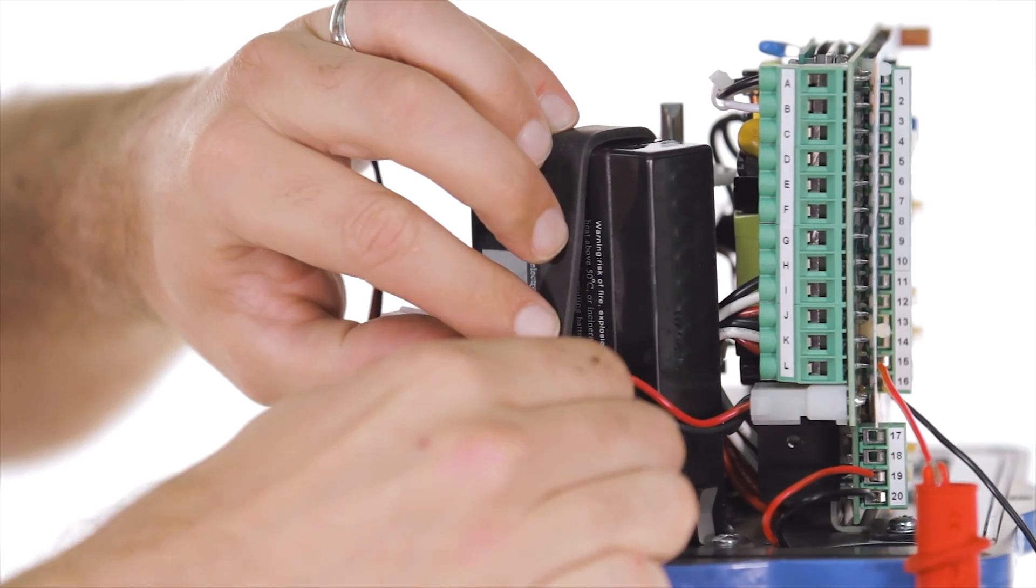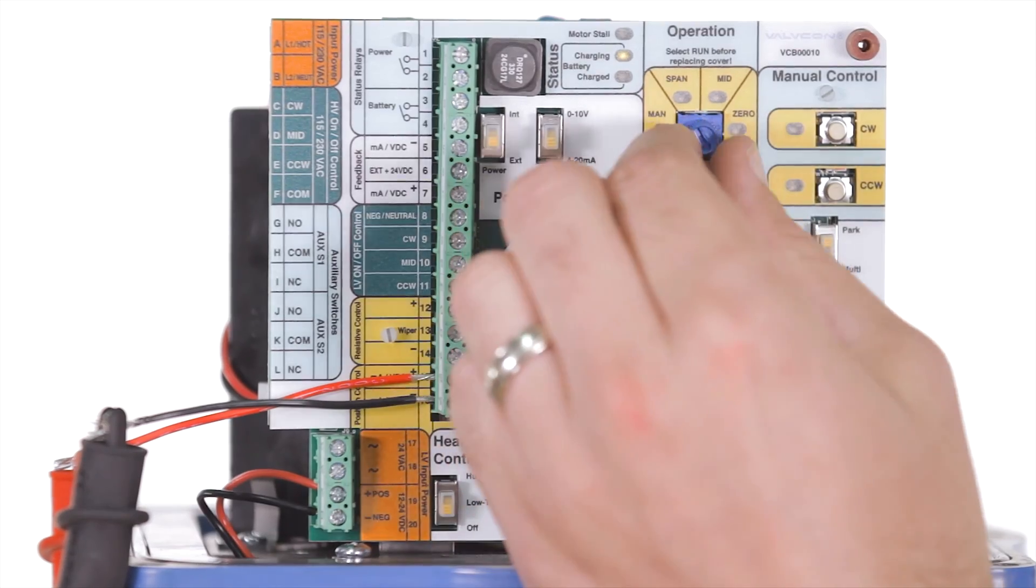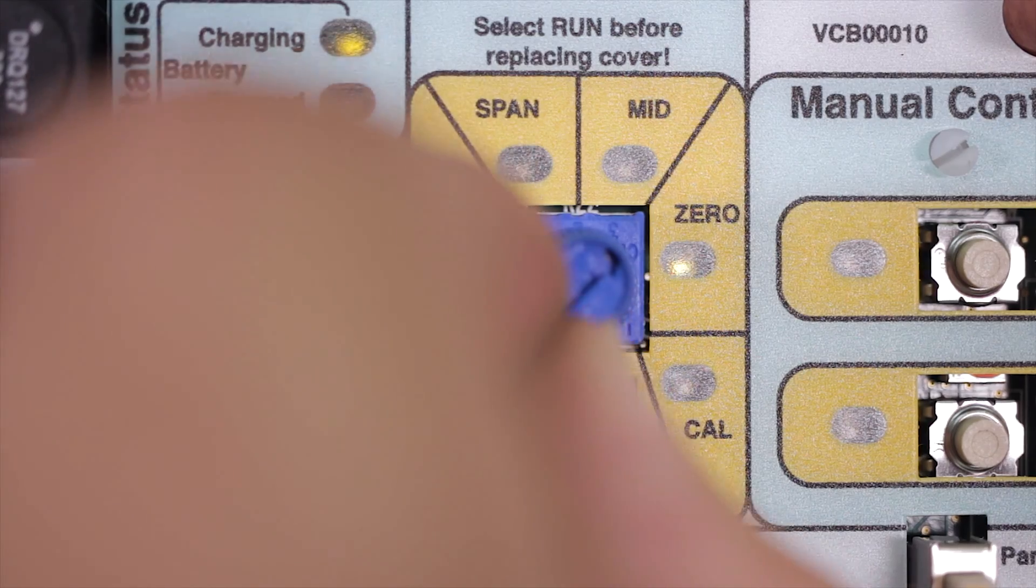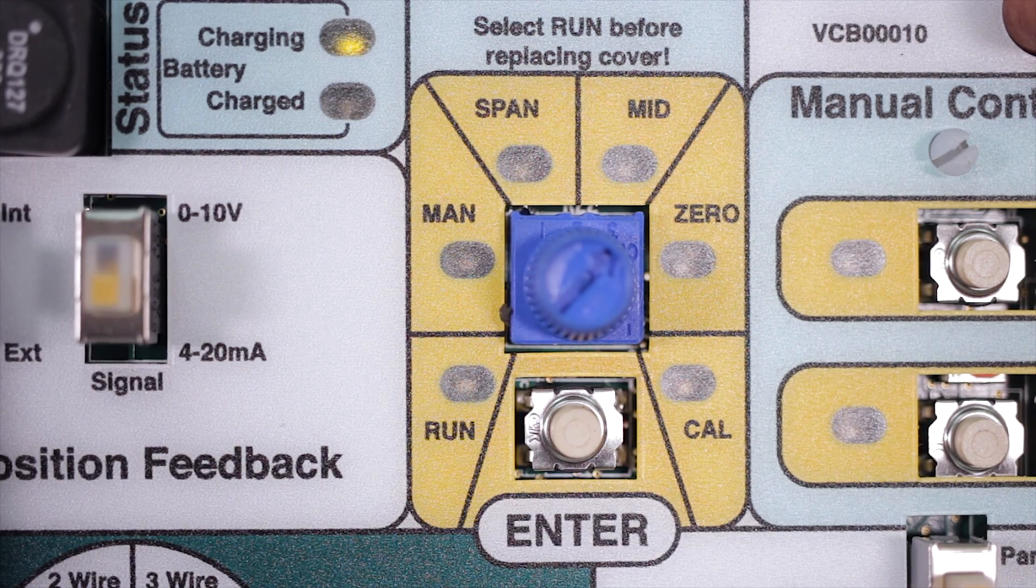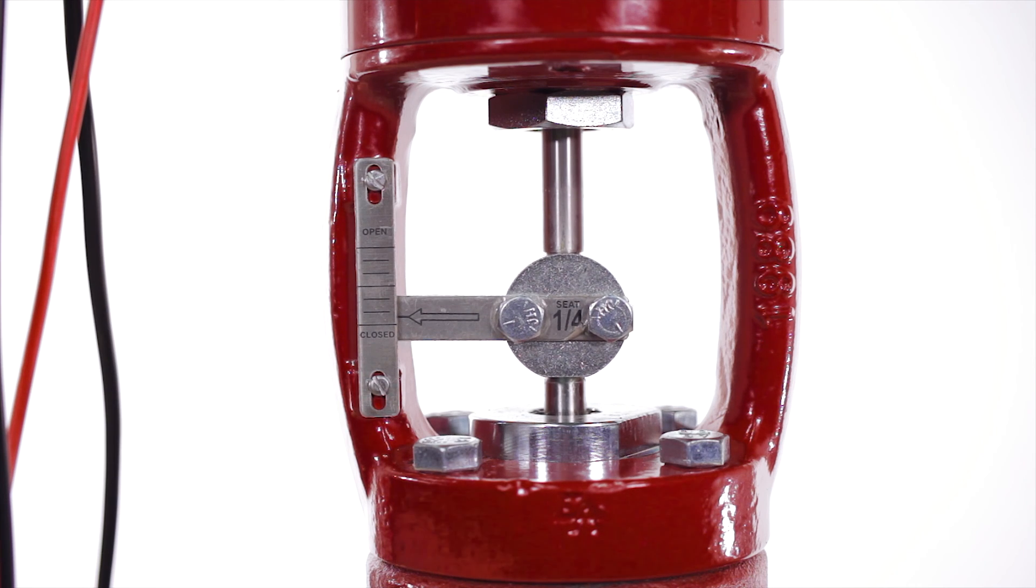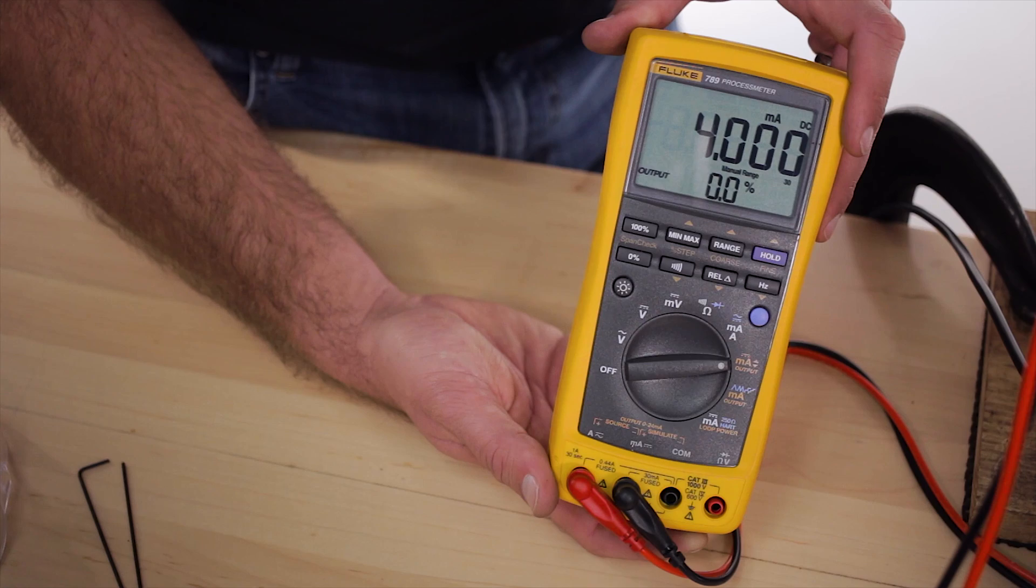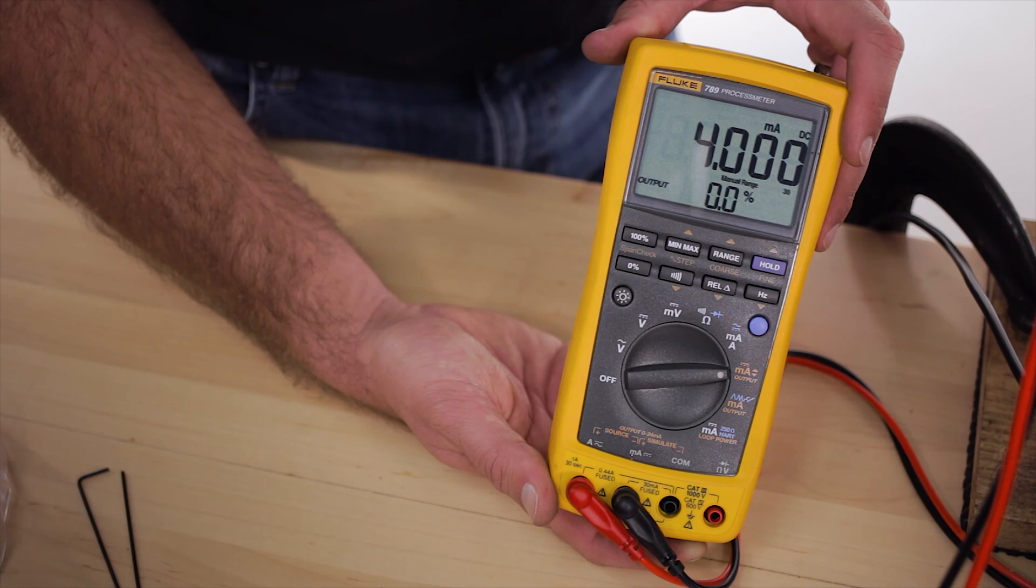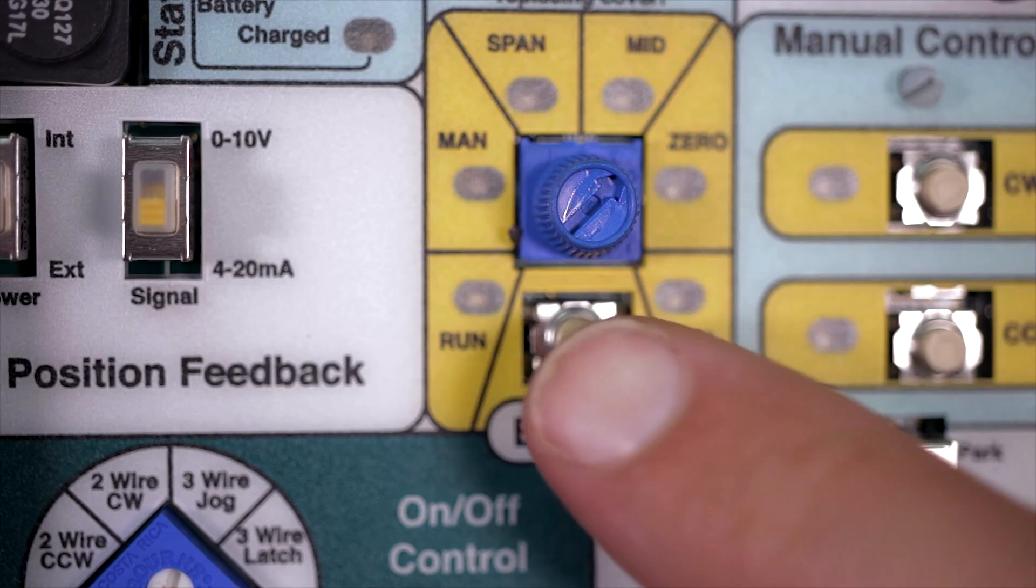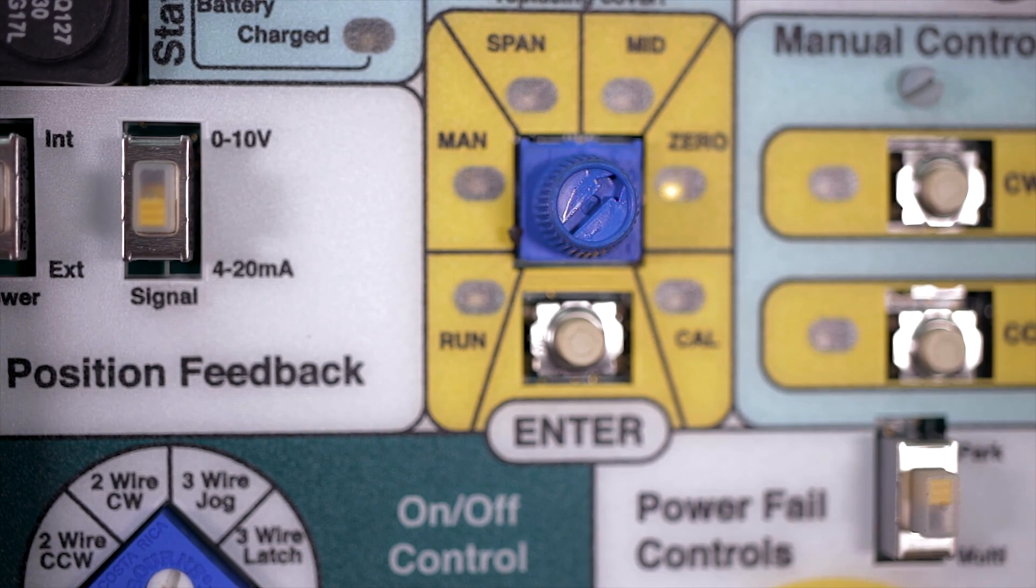Next we'll set your smart limits. Turn your operation mode selector switch to the zero setting and hold the enter button down for two seconds until the LED starts blinking. Run your valve to the fully closed position. Next send a four milliamp signal to the actuator from your loop calibrator. Push the enter button to lock in your fully closed signal.